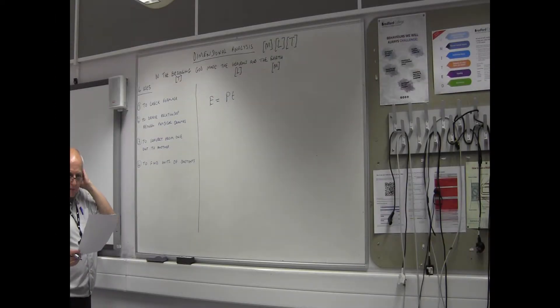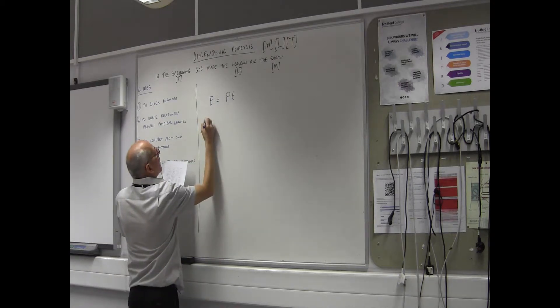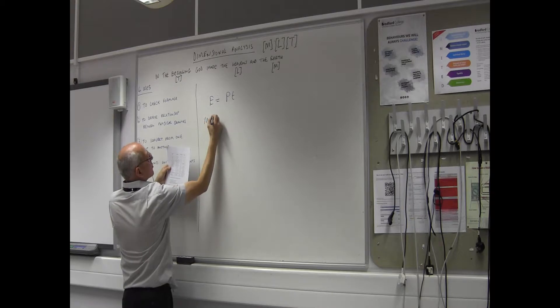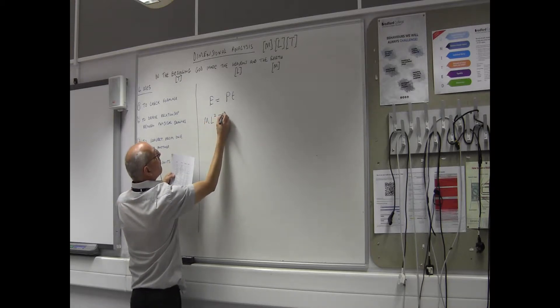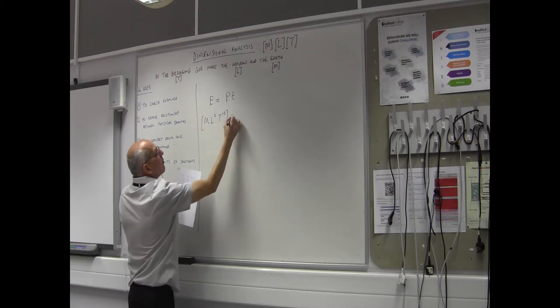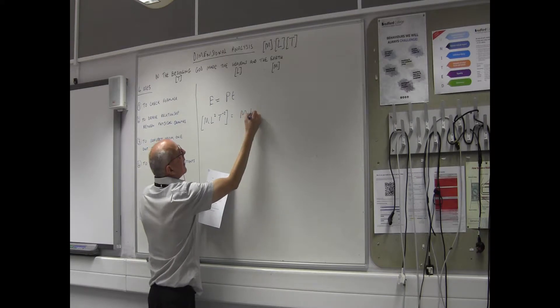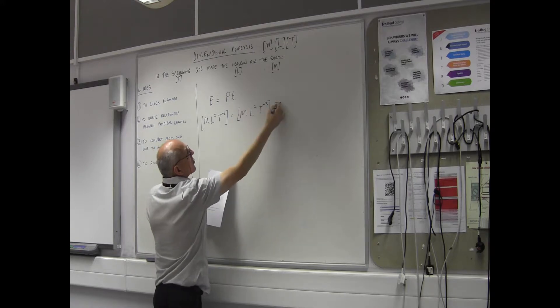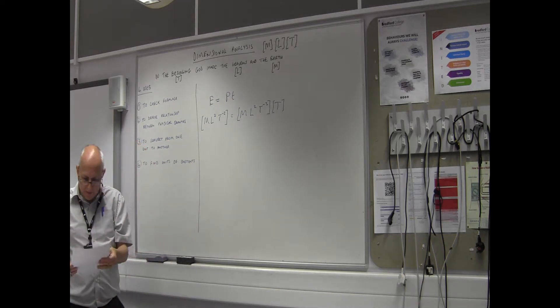The solution for my formula sheet for dimensional analysis: energy is M L squared T minus 2. The left hand side. The right hand side, power is M L squared T minus 3, and then I've got T. Remember it this time. So I've got time.